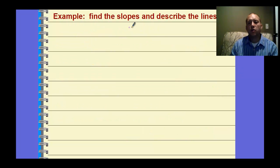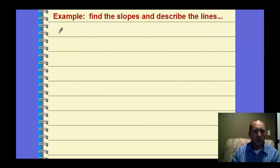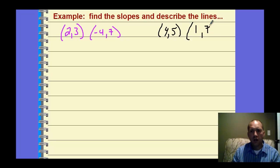So finding the slopes and describing the lines. If we're given two points, so we'll say given the point 2, 3, and then given the point negative 4, 7. And then we can find the slope of that, but let's find another set of points. So we have another set of points, let's say 4, 5, and a point 1, 7. So we have these two points, we want to find what the slopes are of these points, and we want to describe how these lines relate to each other, if we compare them.